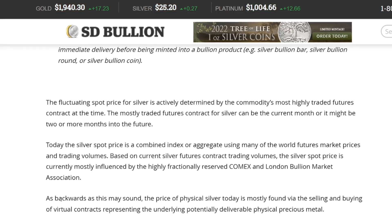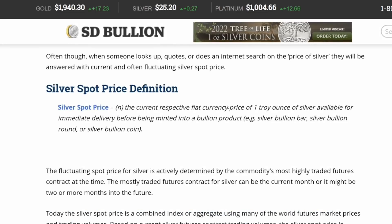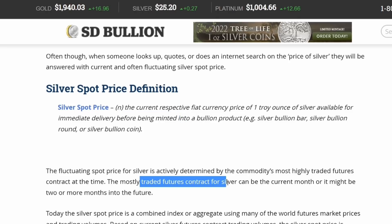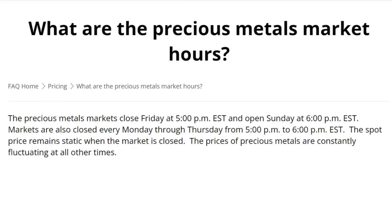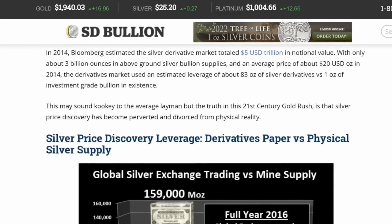So to recap: silver spot price is the price of an ounce of raw silver before being minted, determined by futures contracts. It's worth noting when spot price actually fluctuates. Throughout the day it moves constantly, but over the weekend it doesn't move at all. When the market closes Friday at 5 PM Eastern until Sunday at 6 PM Eastern, spot price won't move. Also, every day between 5 PM and 6 PM Eastern, it pauses for one hour.